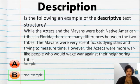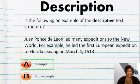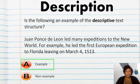Let's try another one. Juan Ponce de Leon led many expeditions to the New World. For example, he led the first European expedition to Florida, leaving on March 4th, 1513. Is that an example of descriptive text structure? If you said that is an example, you're correct. Because it says, for example, it's describing his first expedition. Great job. Let's continue.